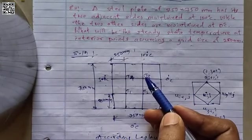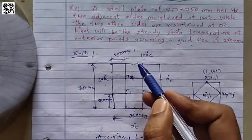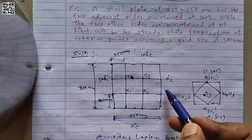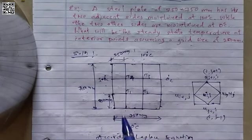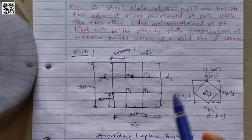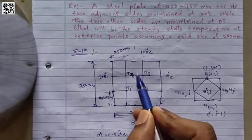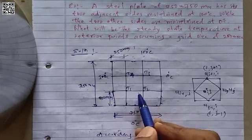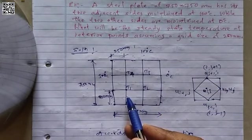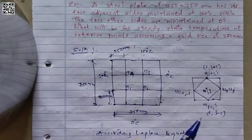Two sides of the plate are at 100 degrees Celsius and the other two sides are at 0 degrees Celsius — so a square plate has four sides, two at 100°C and two at 0°C. He is asking us to find the temperature at the grid points or interior points: T1, T2, T3, and T4. These are the interior points, which are the points lying inside the plate away from the outer border.